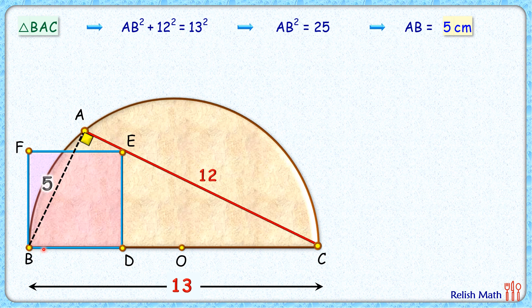Now let's assume the side length of this square is x cm. Now this full diameter is 13 cm. So DC length will be 13 minus x cm.